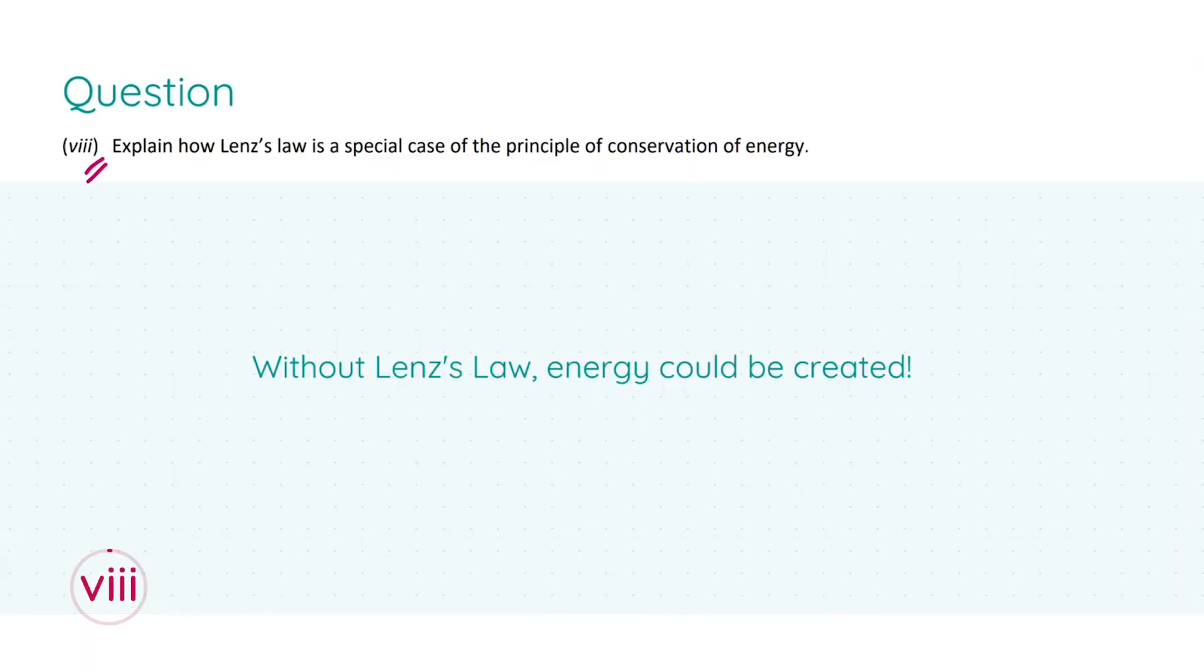In part eight we're asked to explain how Lenz's law is a special case of the principle of conservation of energy. Basically without Lenz's law, energy could be created. This will get you five marks. The reason it is so is without it, we would be able to induce the current with no change at all anywhere. So what Lenz's law is doing is we want to oppose any change in motion to restore neutrality and balance to the universe.